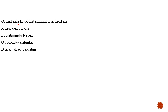The next question is about Asia's first Buddhist Summit. The options are Kathmandu (Nepal), Colombo (Sri Lanka), Islamabad (Pakistan), or New Delhi (India). The correct answer is New Delhi, India. The summit was to be held the next day — 5th November — in New Delhi. The theme of this summit is: 'The Role of Buddha Dharma in Strengthening Asia.' Please remember this theme.